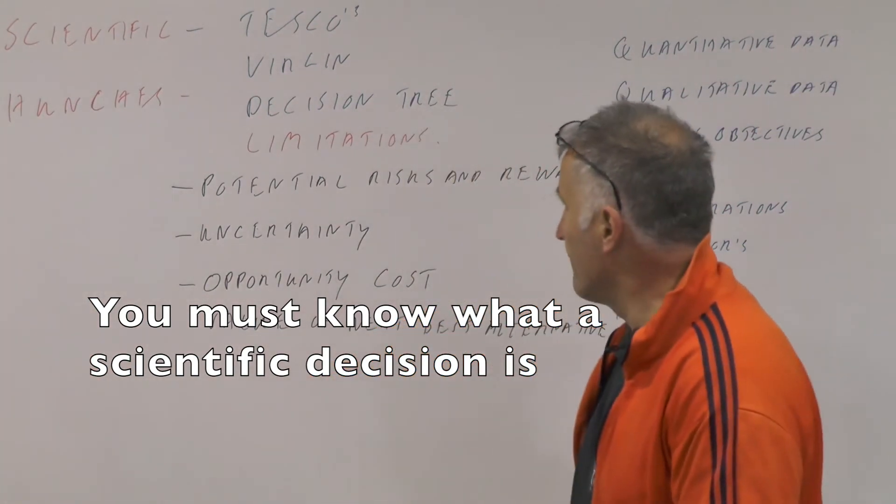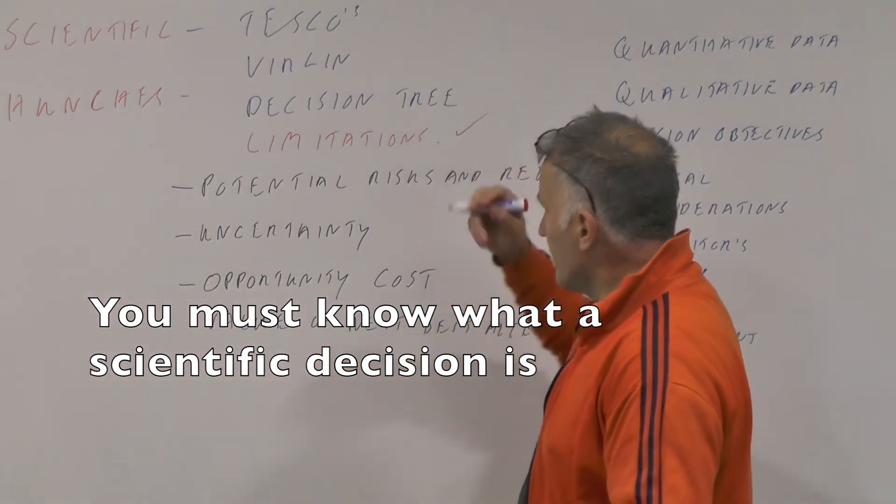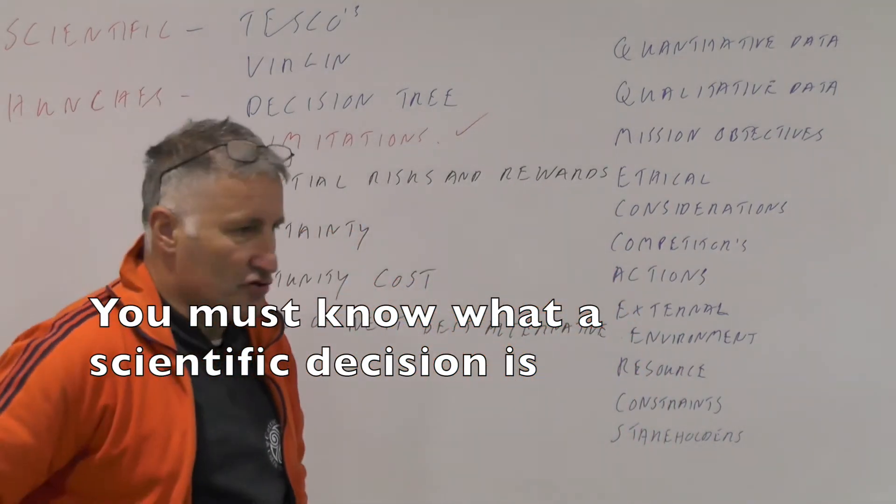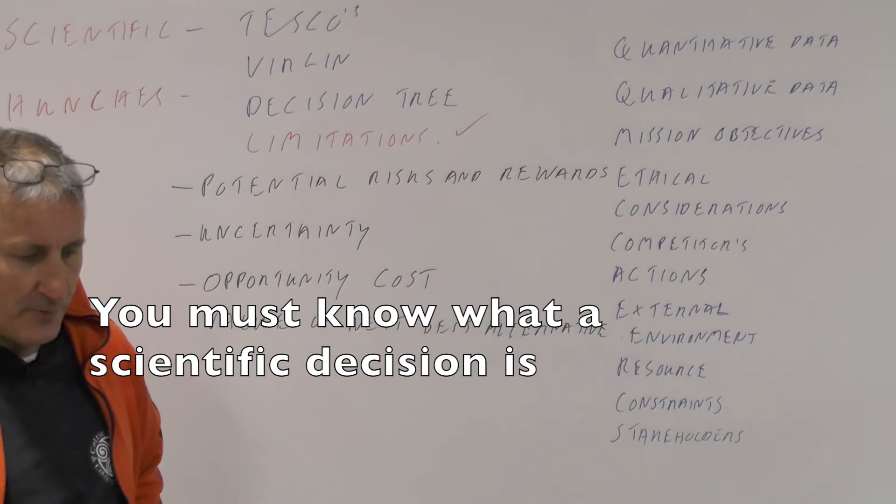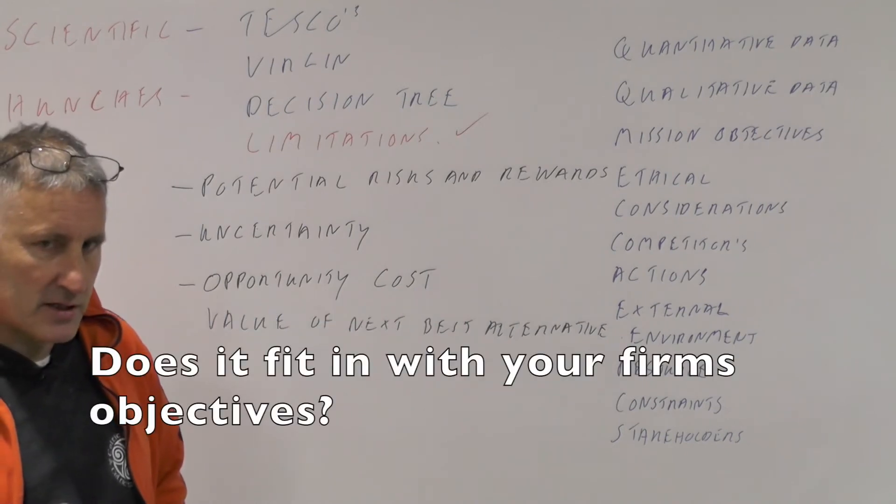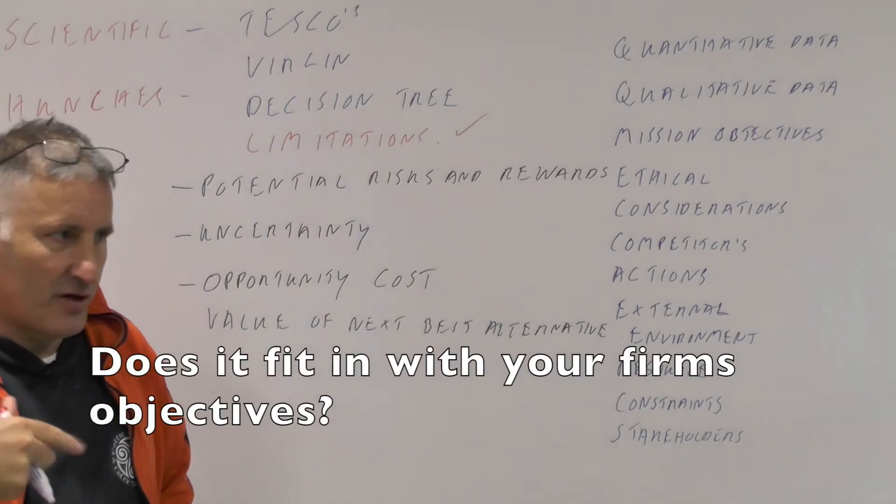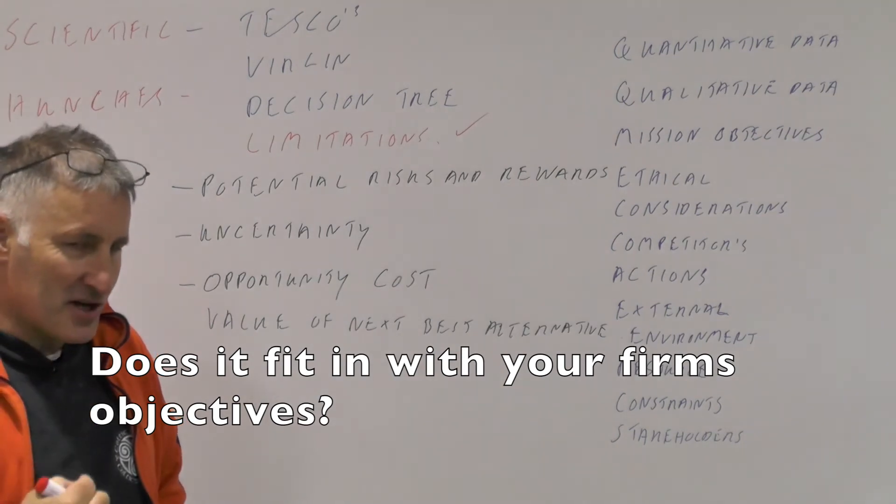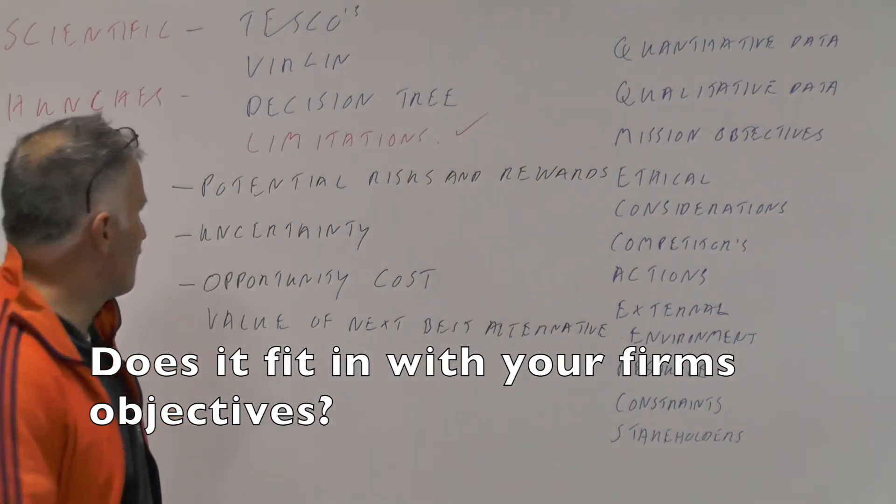Clearly there are limitations of a decision tree - where do the numbers come from? Who assigns the probabilities? Also, the environment will change. But the reason why we use scientific decision-making is that it reduces risk and uncertainty.